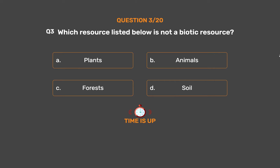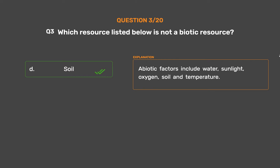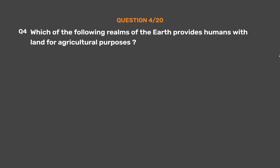The correct answer is Option D: Soil. Abiotic factors include water, sunlight, oxygen, soil, and temperature.